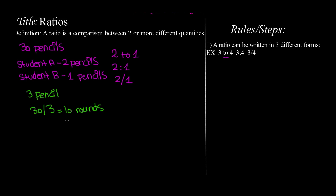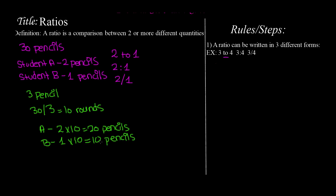To find how many pencils each student receives, we multiply. Student A gets two pencils per round for 10 rounds, so student A receives 20 pencils. Student B gets one pencil per round for 10 rounds, so student B receives 10 pencils. We can verify this: 20 plus 10 equals 30, which is the total. We can also write this as the ratio 20 to 10, which is the same as 2 to 1.